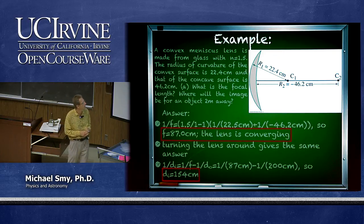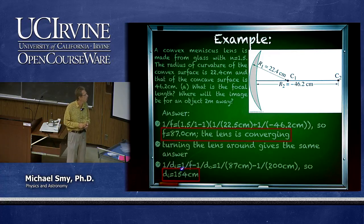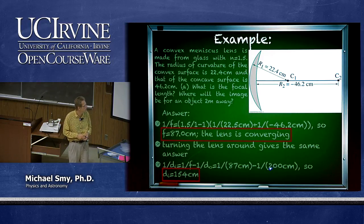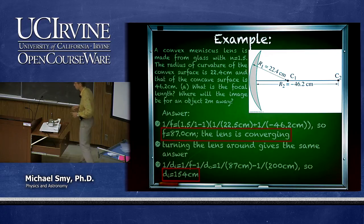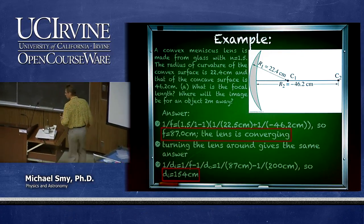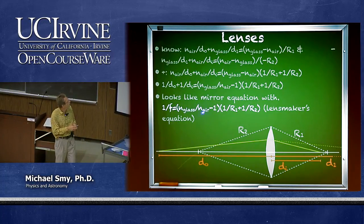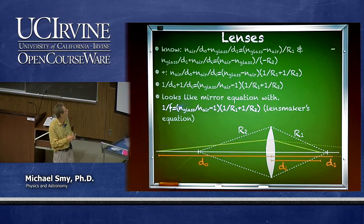So it's a converging lens whether the light comes from the left or the right. We can find the image distance using the lens equation: 1/d_i = 1/f - 1/d_o, which gives 1/87 cm minus 1/200 cm, yielding an image distance of 154 centimeters. A student asked which formula was used for the first calculation — it's the lens maker's equation, which uses the index of refraction and the two curvatures to give the inverse focal length.